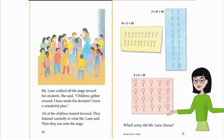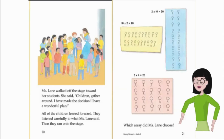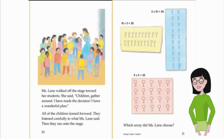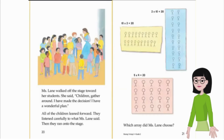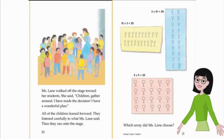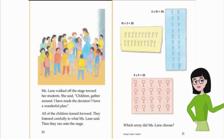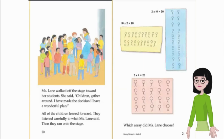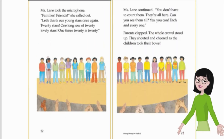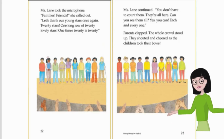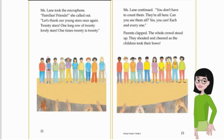All of the children leaned forward and listened carefully to what Ms. Lane said. Then they ran onto the stage. Which array did Ms. Lane choose? Two groups of 10 equals 20? Ten groups of 2 equals 20? Five groups of 4 equals 20? Ms. Lane took the microphone. 'Families? Friends?' she called out. 'Let's thank our young stars once again. 20 stars. One long row of 20 lovely stars.'